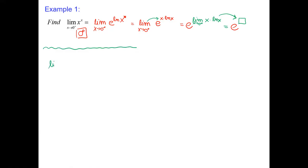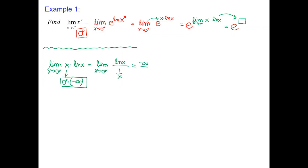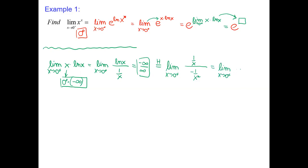Let's compute the limit as x goes to 0 of x times ln(x). We can see this is 0 times negative infinity — the natural logarithmic function at 0 is negative infinity — so we have an indeterminate product form. We switch and rewrite as a quotient: ln(x) over 1/x. Logarithm at 0 is negative infinity; 1/0 is positive infinity. We apply L'Hôpital: derivative of ln(x) is 1/x, derivative of 1/x is −1/x². After simplifying, we get negative x, which goes to 0. So this limit is 0, and the final answer is e⁰ = 1.